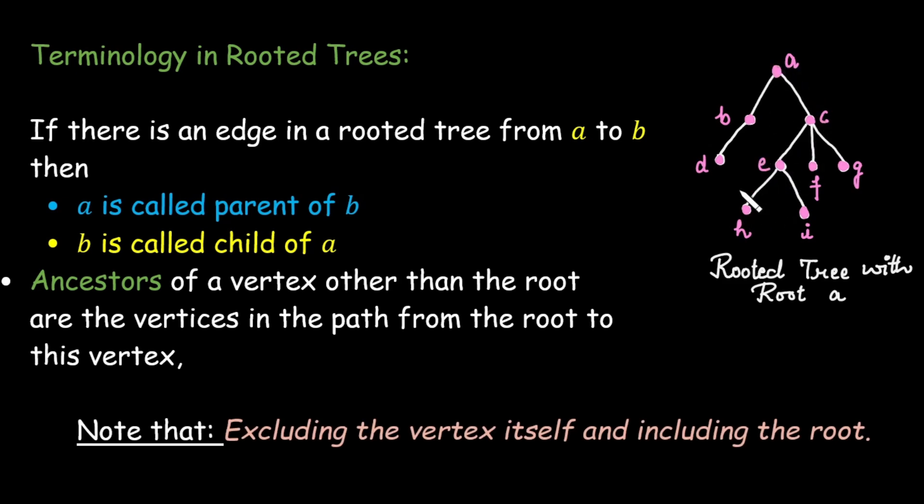We do not include h itself as its own ancestor because ancestor means the parent of that vertex, then further their parents, then further its parents. So till the time we have not reached the root we will take all such vertices. Note that root has no ancestors.